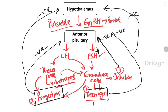This negative feedback occurs when the peripheral levels of estrogen as well as progestins increase. This entire system is what is called the hypothalamo-pituitary-ovarian axis.